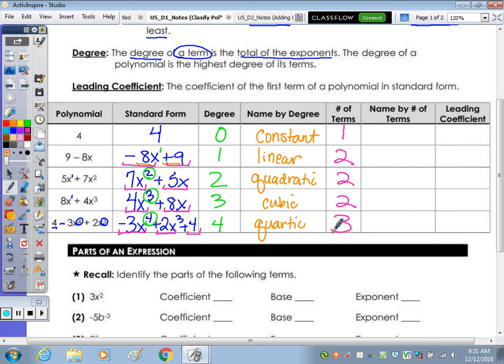Name by the number of terms. So we have a name by degree, a name by number of terms. An expression that just has 1 term is called a monomial. That prefix mono for 1. So the next 3,